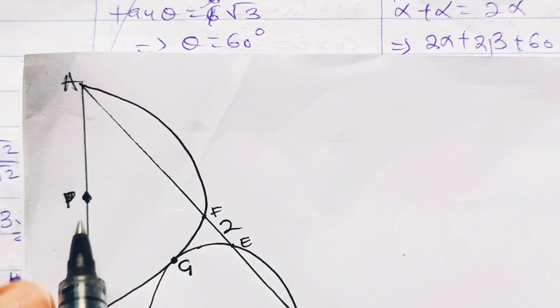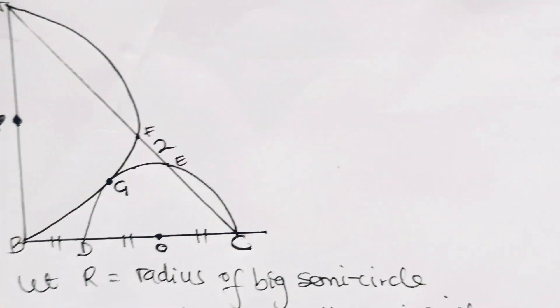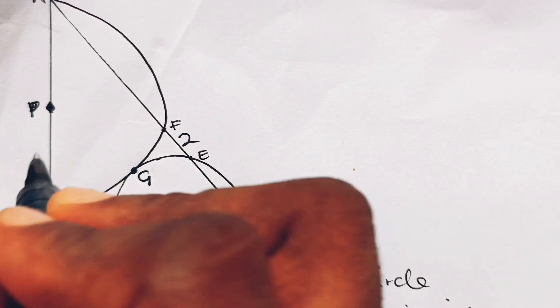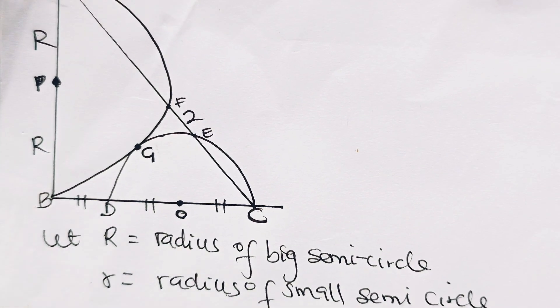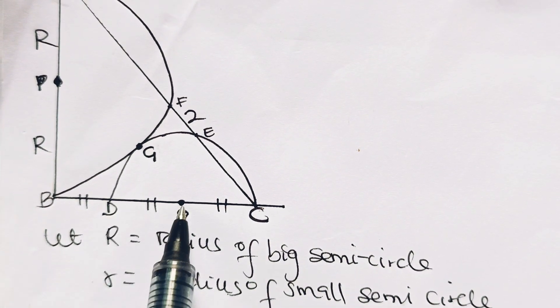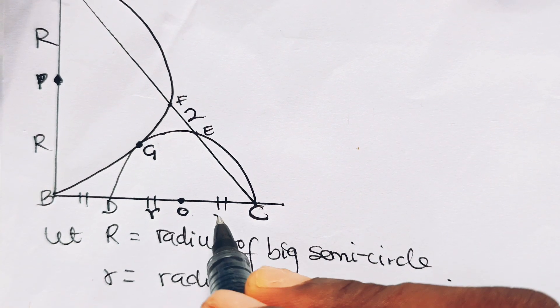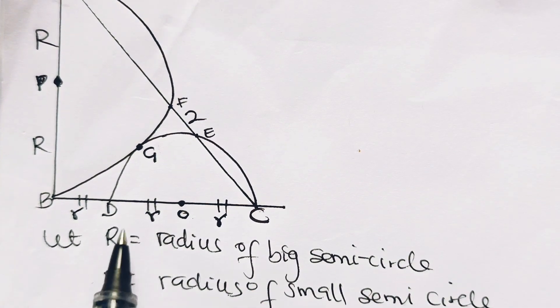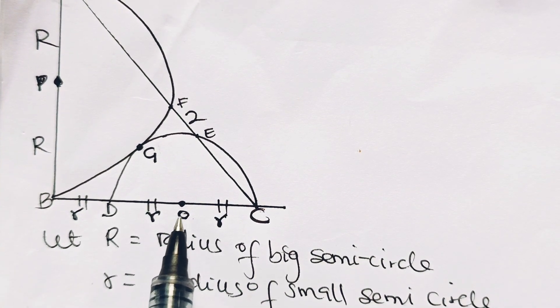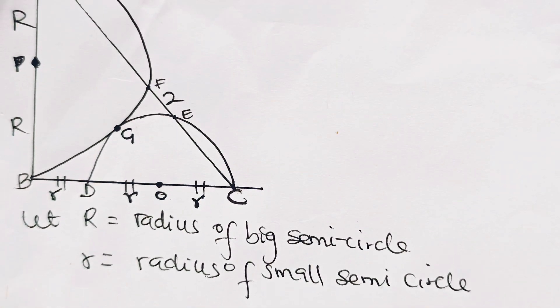From here to here is big R, and from here to here is big R as well. From here to here is small r, from here to here is also small r, and from here to here is small r — since BD is equal to DO, which is equal to OC.